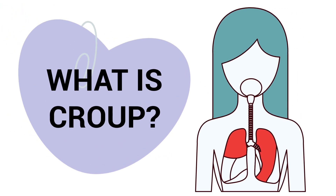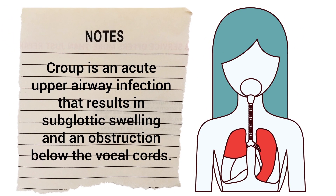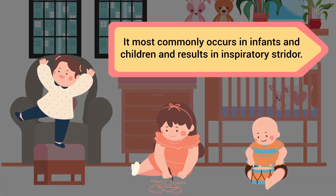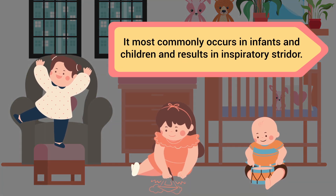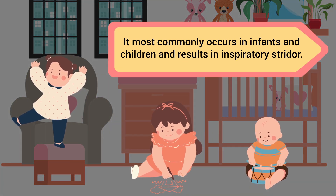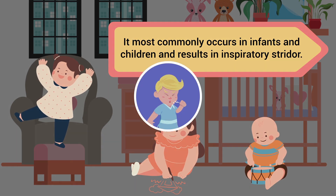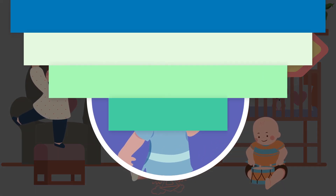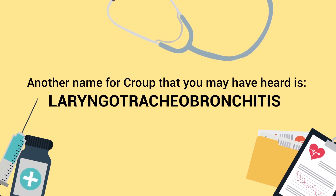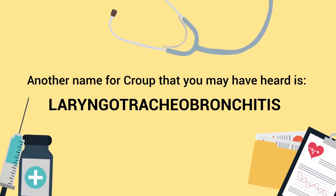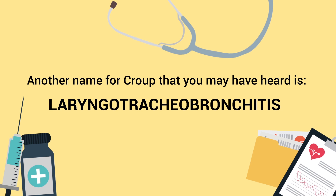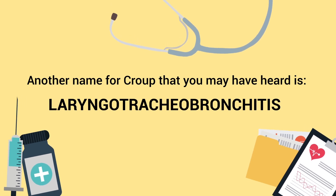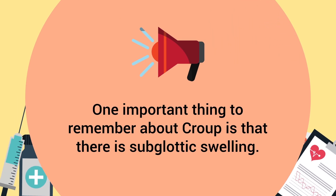Croup is an acute upper airway infection that results in subglottic swelling and an obstruction below the vocal cords. It most commonly occurs in infants and children and results in inspiratory stridor, causing the child to have a barking cough. Another name for croup that you may have heard is laryngotracheobronchitis — so let's just stick with croup for now.